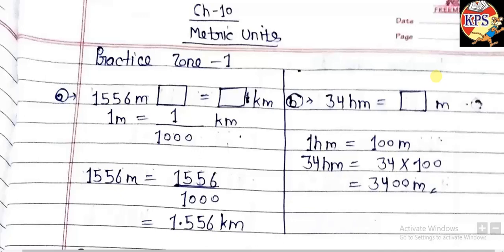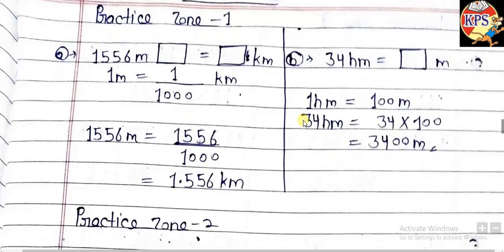Hello and good morning. In this video we are going to solve chapter number 10, practice zone first and second. In my previous videos I had already explained about metric units and how to convert from one unit to another. Now we are going to solve practice zone one and two. In practice zone first, we have to convert 1556 meters into kilometers.